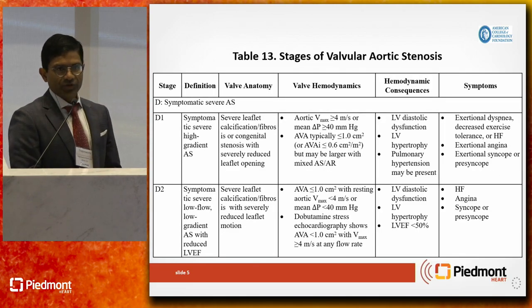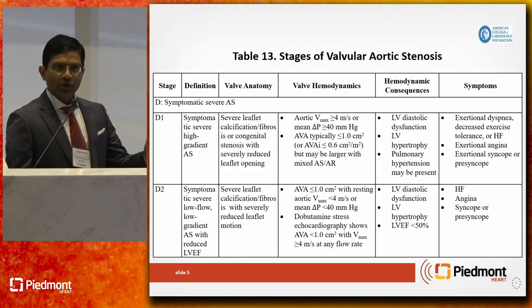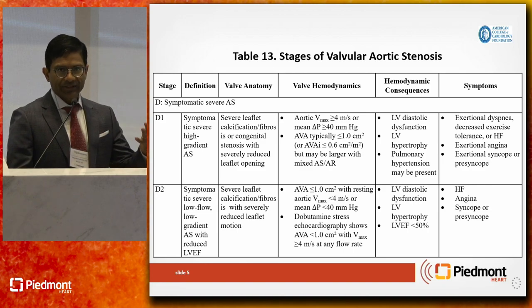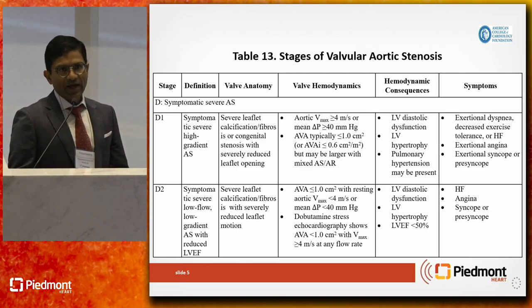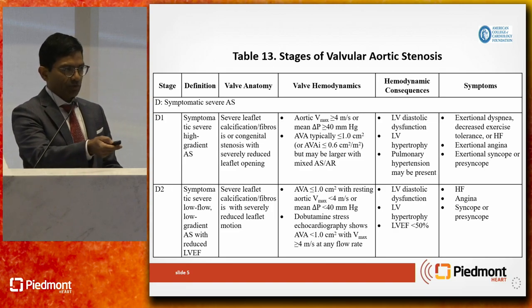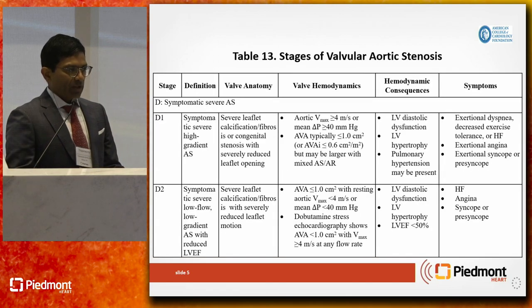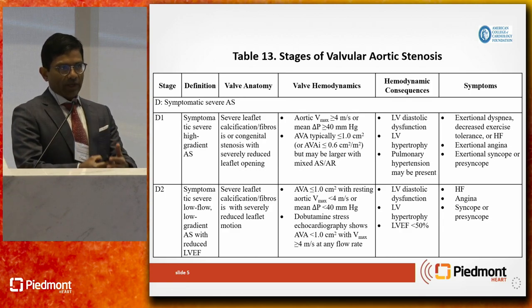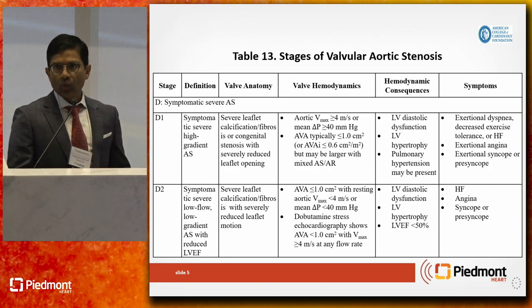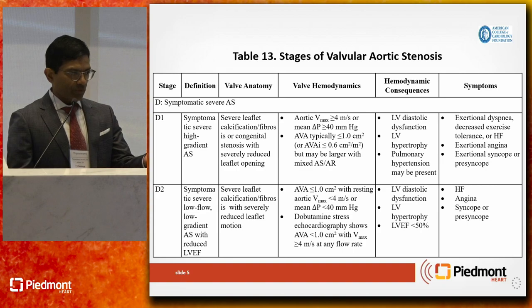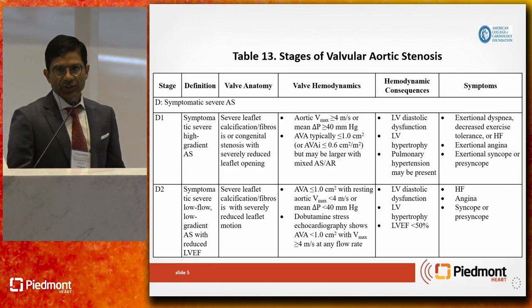What I've been asked to talk about is the low flow, low gradient patients. Stage D are symptomatic aortic stenosis patients. Stage D1 — the classic patients with high gradient, low valve area, normal ejection fraction, symptomatic — those patients need a referral to the valve center. Stage D2 and D3 involve a discordance between the valve area and the gradient. You get the echo report back, the valve area is low — less than one, so that's severe aortic stenosis — but the gradients are not high enough to call it D1. These patients fall into D2 and D3.